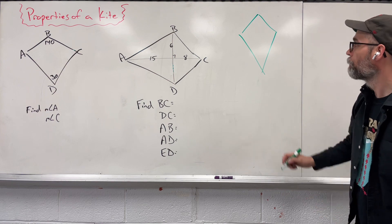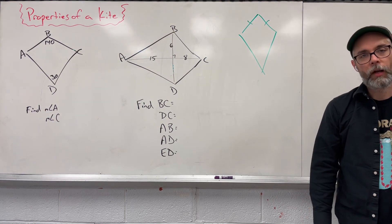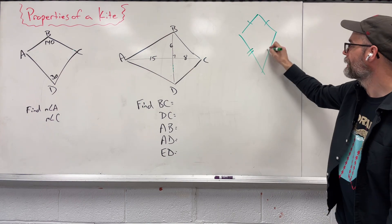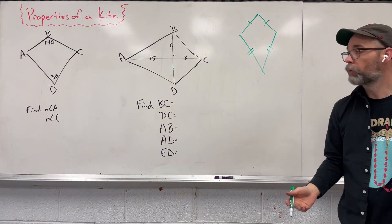Now, what's so special about this one? We have one set of consecutive sides that are the same, consecutive meaning next to. We have a second set of consecutive sides that are next to, that are both congruent to each other.